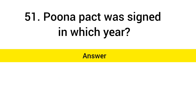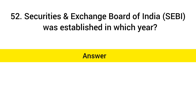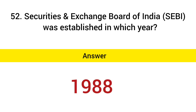Poona Pact was signed in which year? Answer: 1932. Securities and Exchange Board of India (SEBI) was established in which year? Answer: 1988.